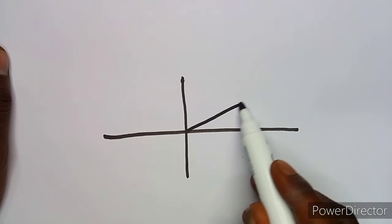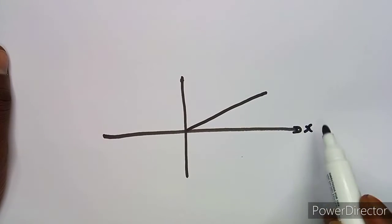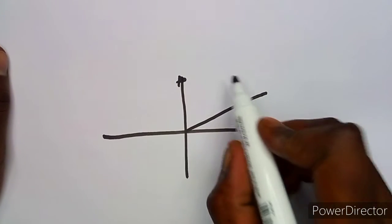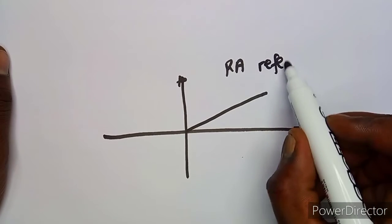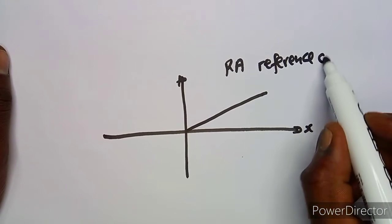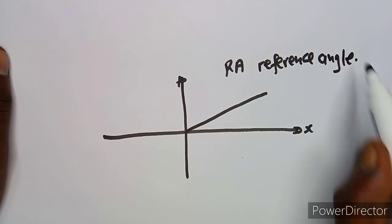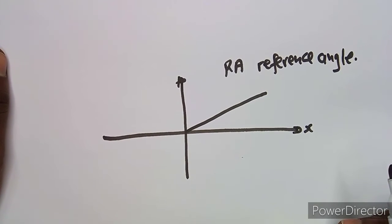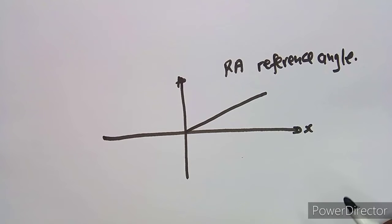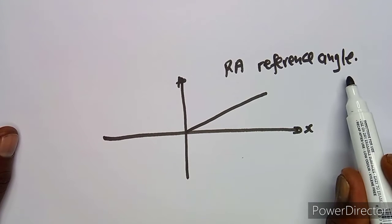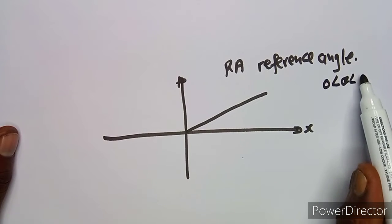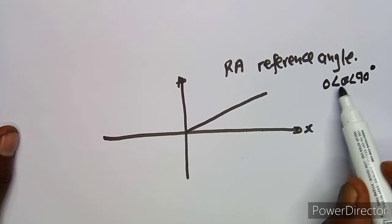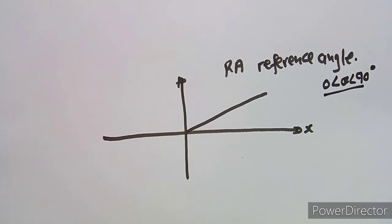Each and every quadrant consists of what is referred to as the reference angle. The reference angle represents the acute angle, where theta is greater than zero but less than 90 degrees — so theta is in between, not at 90.